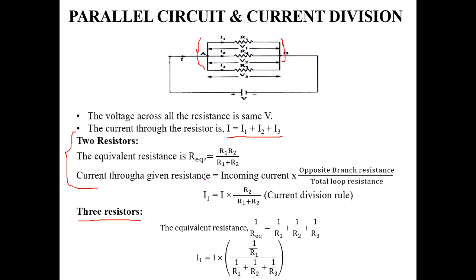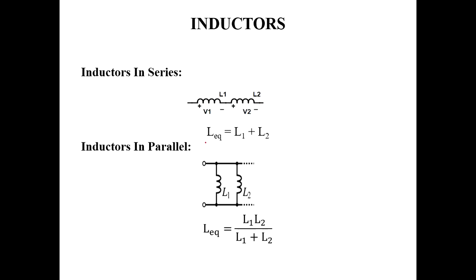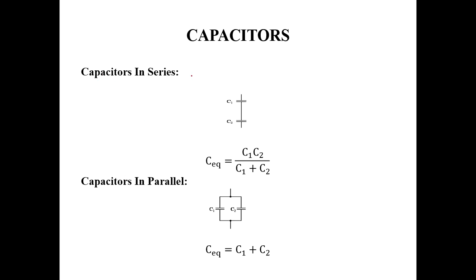For inductors in series, L_eq equals L1 plus L2. For inductors in parallel, L_eq equals L1 times L2 divided by L1 plus L2. For capacitors in series, C_eq equals C1 times C2 divided by C1 plus C2 — this is opposite to the inductor formula. For capacitors in parallel, C_eq equals C1 plus C2.